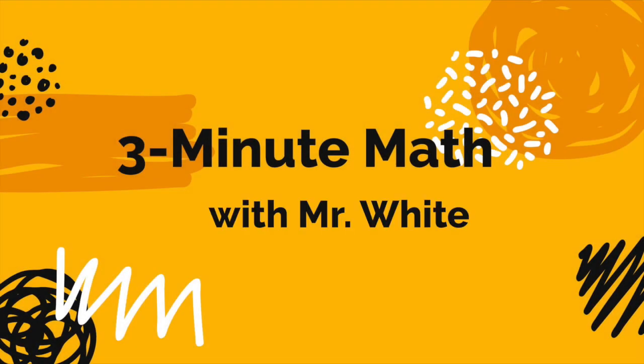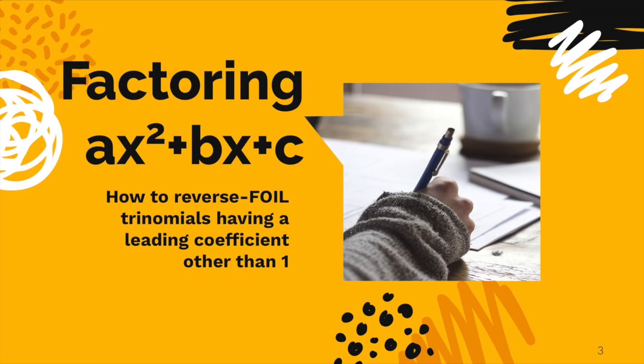This is 3-Minute Math with Mr. White. In this episode, we're going to be talking about factoring ax² + bx + c. In other words, how to reverse-foil trinomials that do not have a leading coefficient of 1. So it's something other than 1. Let's get right to it.